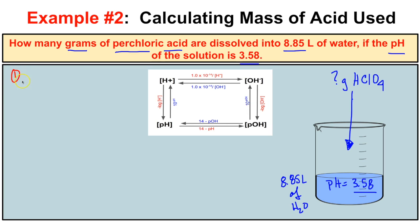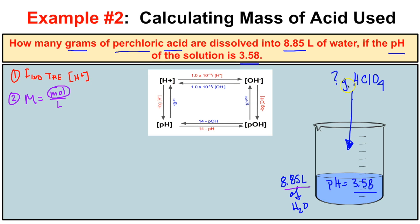In step one we'll find the H+ concentration of our solution. Once we have that, we'll plug it into our molarity formula — molarity equals moles per liter — and using the volume given in the problem we can solve for the number of moles of HClO4. In step three we convert those moles to grams by multiplying by the molar mass of HClO4.